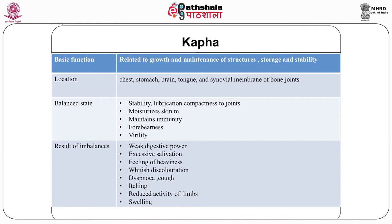Kapha is situated in the chest, stomach, brain, tongue and synovial membrane of the bone joints. In normal state, Kapha controls the anabolic forces and is responsible for growth and maintenance of structures, storage and stability — it provides cohesion that holds the cells together. Kapha provides stability, lubrication and compactness to joints, moisturizes skin, maintains immunity, and supports forbearance — the capacity to withstand or withhold emotions and stress — expressed as calmness and forgiveness. Imbalance of Kapha can result in weak digestive power, excessive salivation, feeling of heaviness, coldness, whitish discoloration, dyspnea, cough, itching, reduced activity of limbs and swelling.